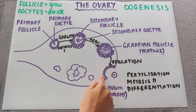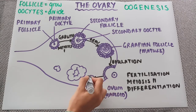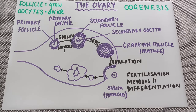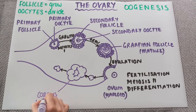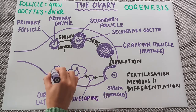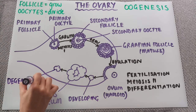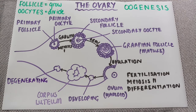The follicle cells are not released in ovulation — it is the secondary oocyte that is released. The follicle cells remain inside of the ovary and start to form these structures here. This large structure is the corpus luteum, which is involved in hormone production throughout the rest of the female cycle. Here we have a developing corpus luteum, and then a degenerating corpus luteum. We look at the corpus luteum in more detail later on.